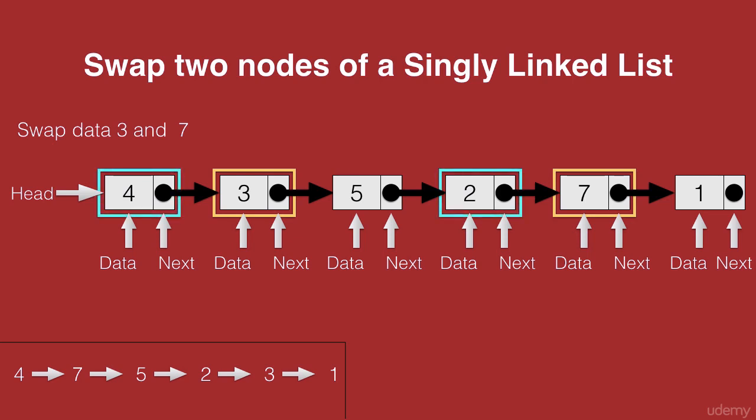Now looking at our final solution, we see that the next of 4 needs to point to 7. Now next of 4 initially points to 3. So we remove the connection from 4 to 3 and make this connection from 4 to 7.